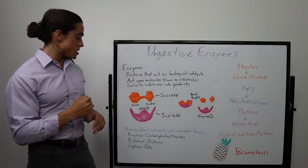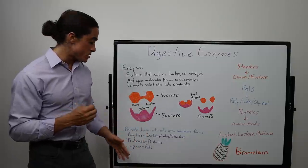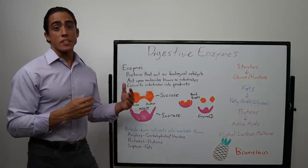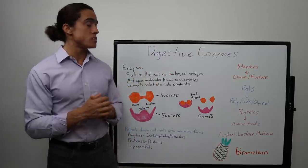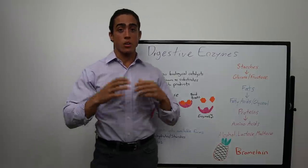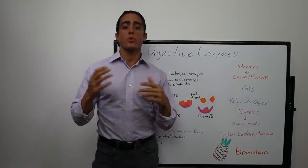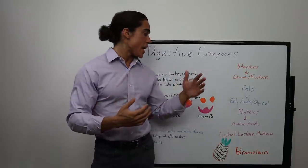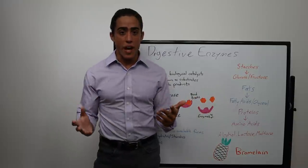The primary groups of digestive enzymes are amylases, proteases, and lipases. Amylases break down carbohydrates and starches, proteases break down protein, and lipases break down fats.